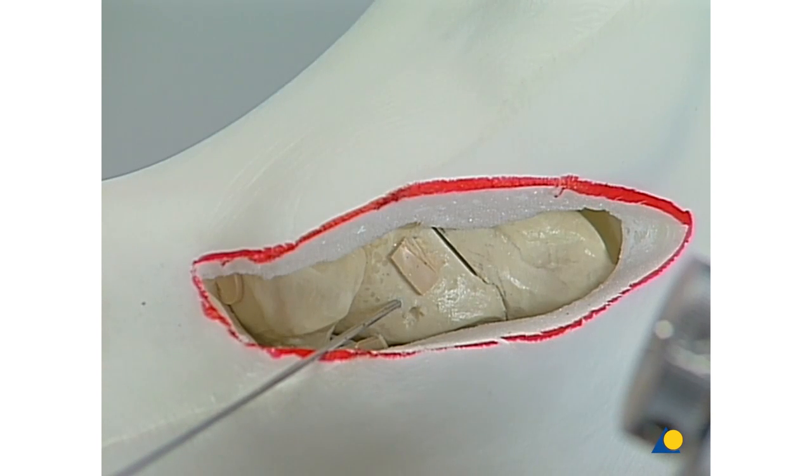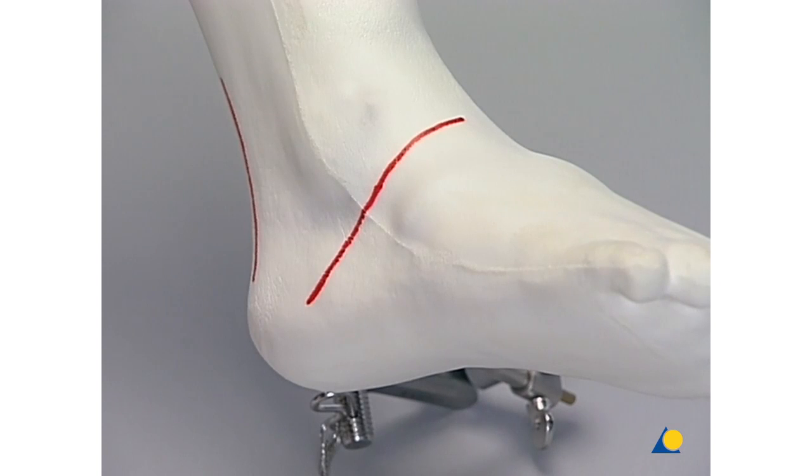And the lateral aspect of the foot is considered for the anterolateral approach. This approach begins on the dorsum of the foot and goes obliquely below and anterior to the lateral malleolus towards the heel.